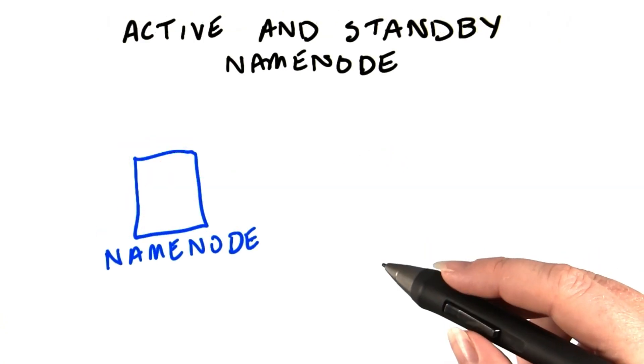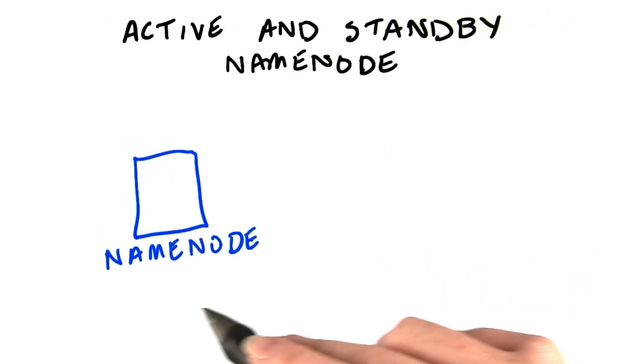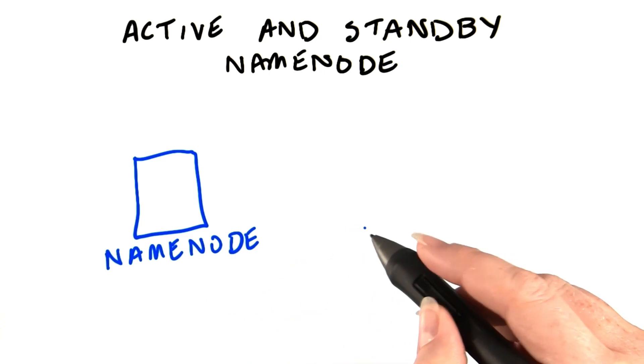These days, there's an even better alternative. The name node is not a single point of failure in most production clusters, because they've configured two name nodes.